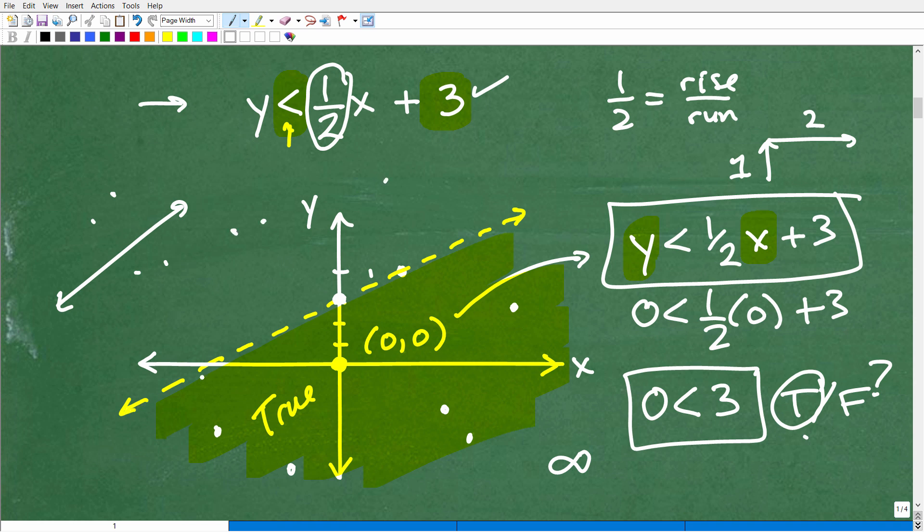Any point up here would create a false situation. Now, let's talk about the dotted line. What does that mean? Well, any point that's on the line is not a solution. If this line was solid, any point that is on the line would be part of the solution as well.